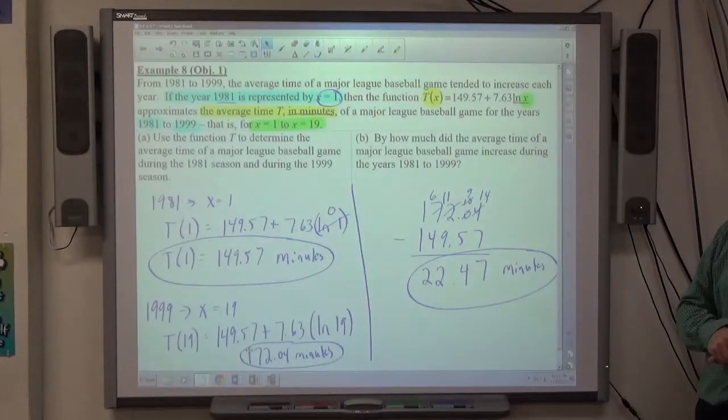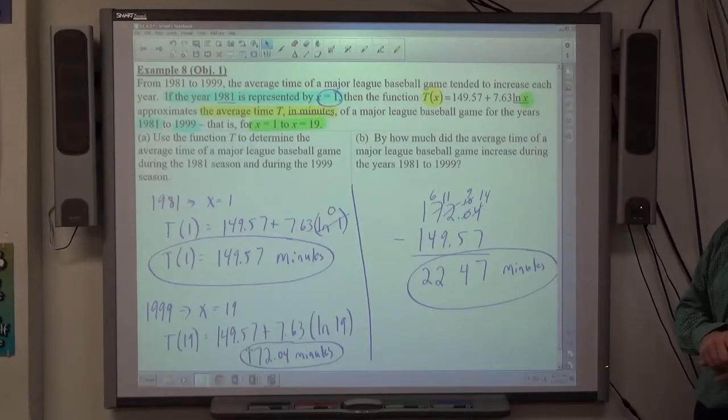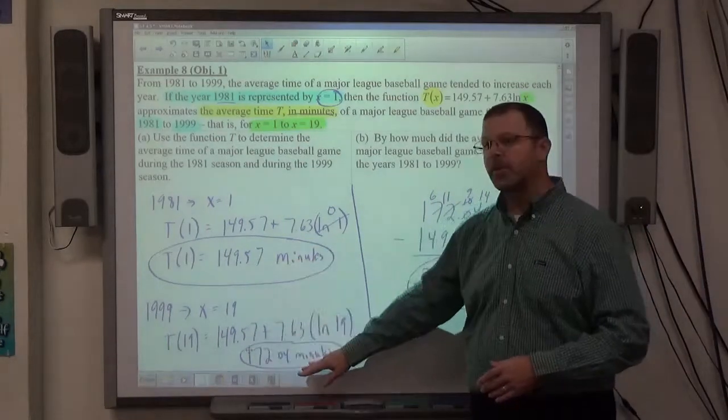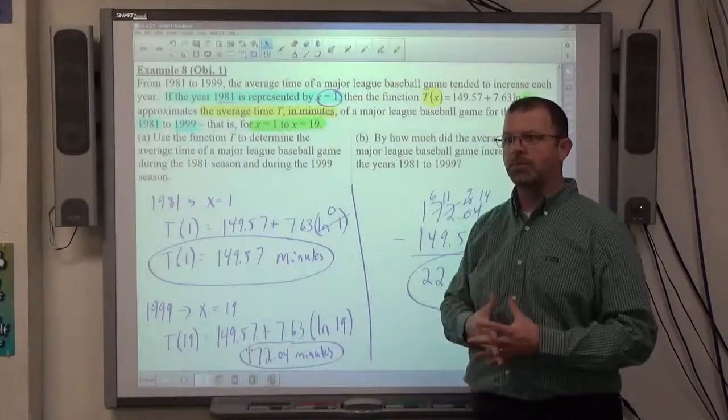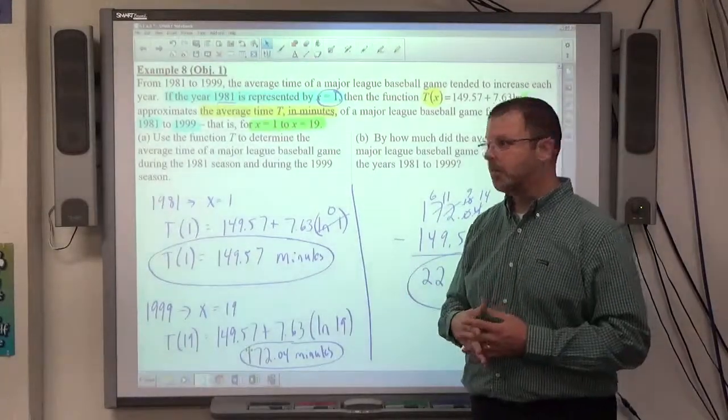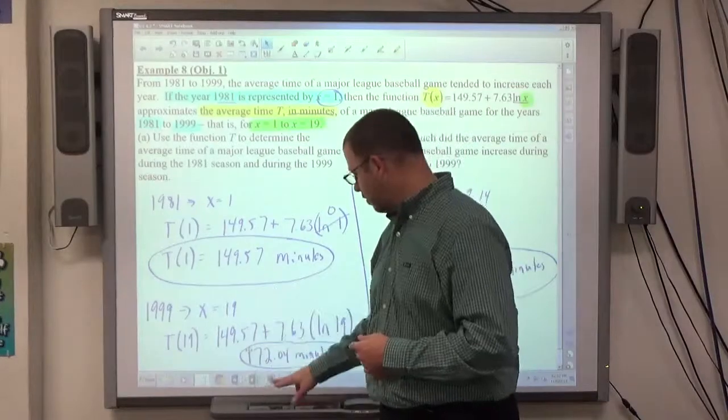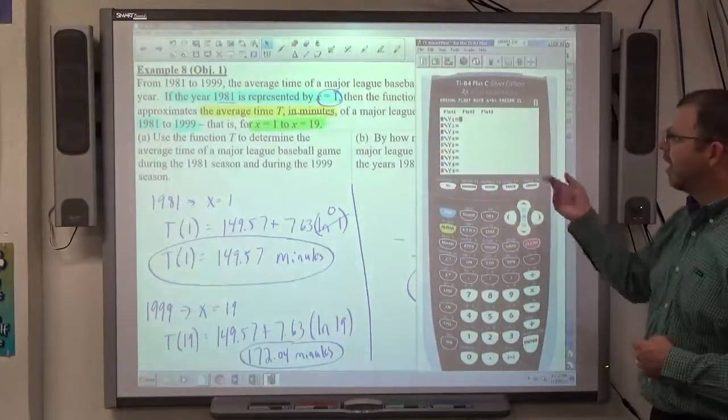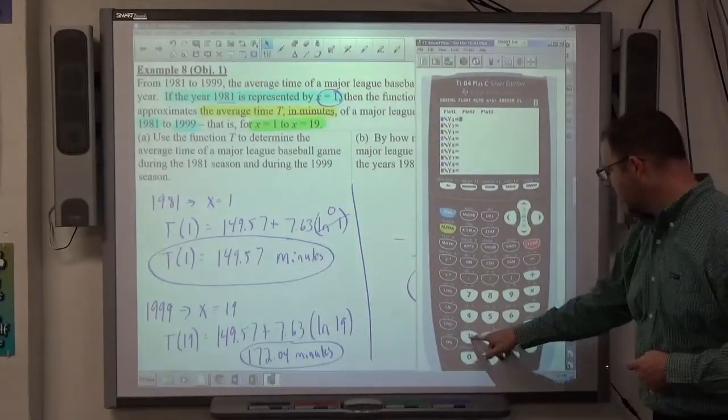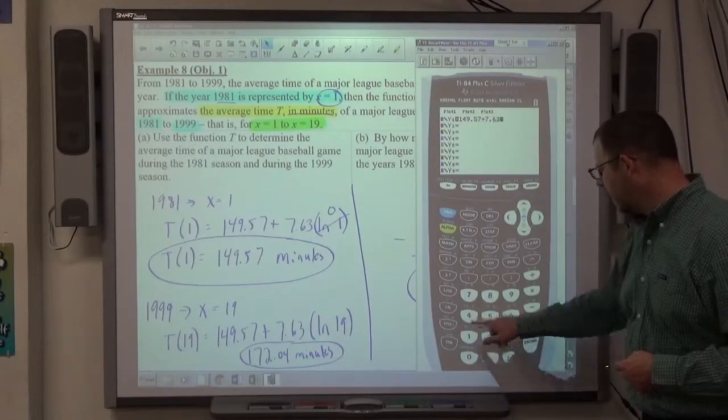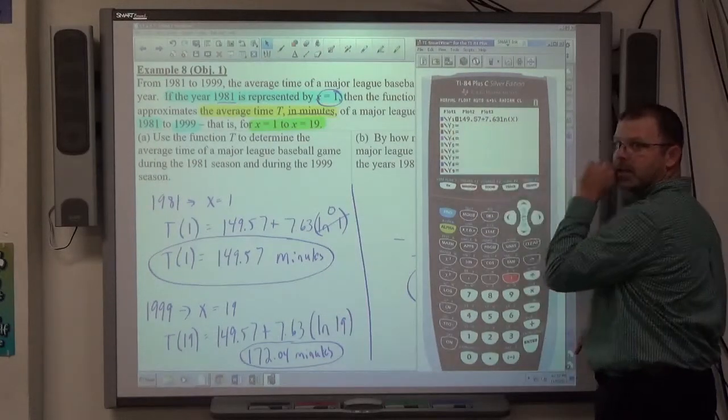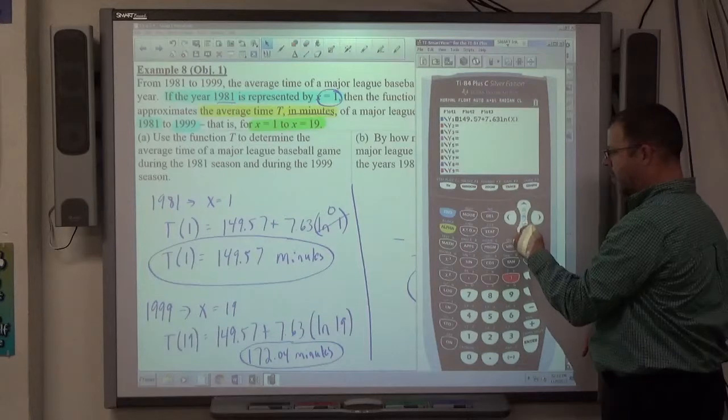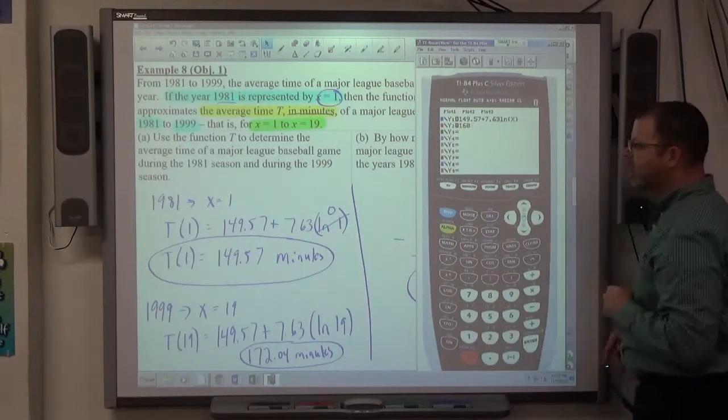Let me just throw one other thing out at you. Suppose they ask for what year it happened such that the Major League Baseball game was 160 minutes. What year did that happen in? We know it started here and it ended there. It's an increasing function because that's what they told us happened. What year was a Major League Baseball game 160 minutes? Something between these. You don't know how to solve the logarithmic equation yet. So what I would do in that situation, I'd go Y equals, clear this out, and I would type in my function, which is 149.57 plus 7.63 LN X. Keep in mind that what I've typed in, X is still the year and Y1 is now the number of minutes. I want the number of minutes to be 160, so I make 160 the second function.